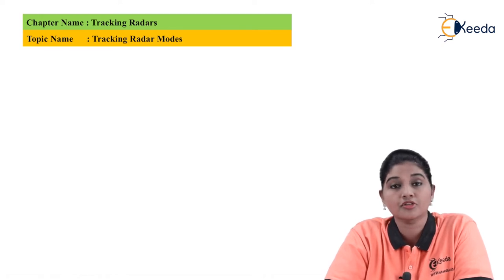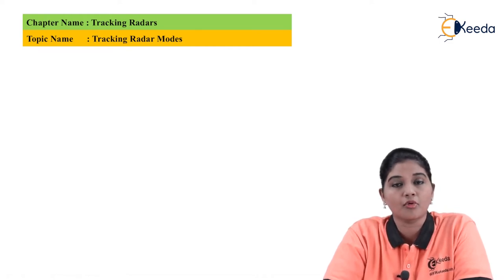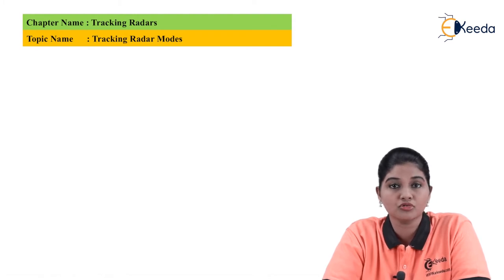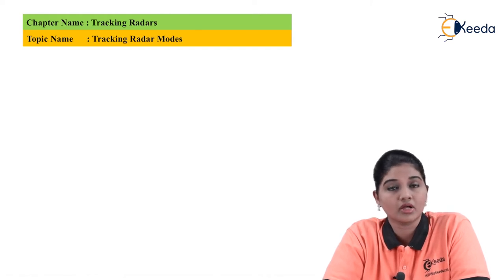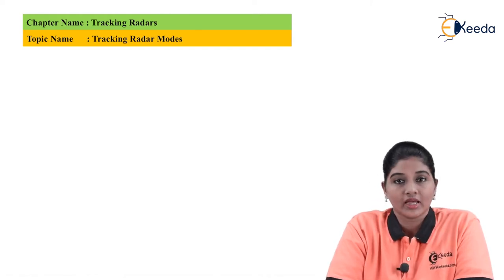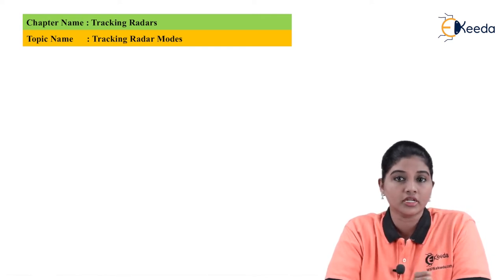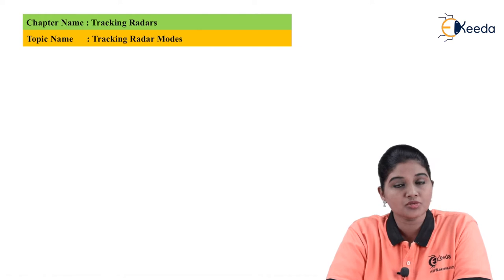Let's first talk about what tracking radar means. Basically, the tracking radar provides coordinates of the target and provides data that can be used to detect the position of the target. The same data can be used for predicting the position of the target in the future. The tracking radar first searches the object and then provides its coordinates in order to detect its position.